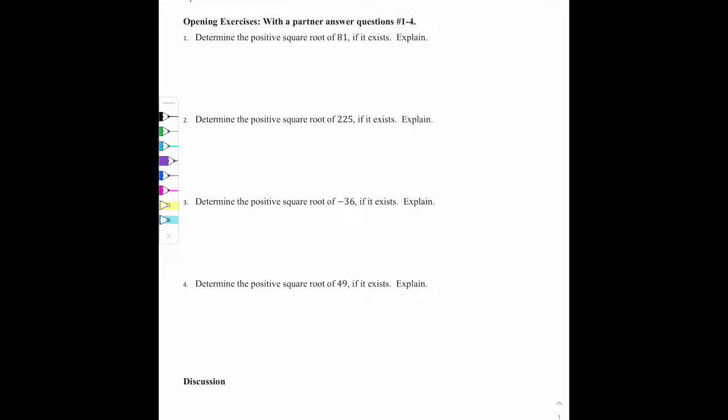Number 1 says, determine the positive square root of 81 if it exists and explain. So we have the square root of 81, we know as 9, because if we take 9 and times it by itself, or in other words, do 9 squared, we know that the answer is 81.